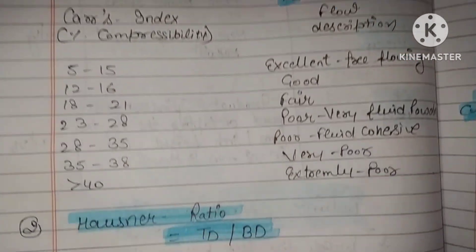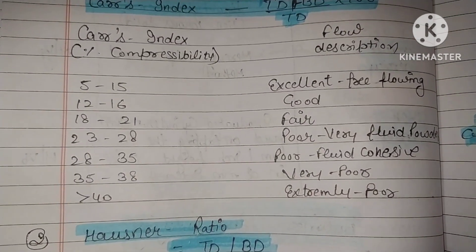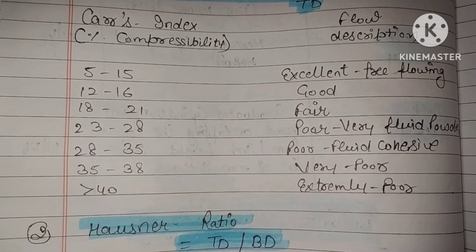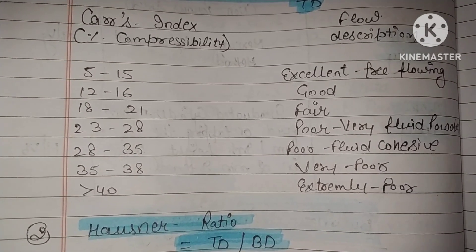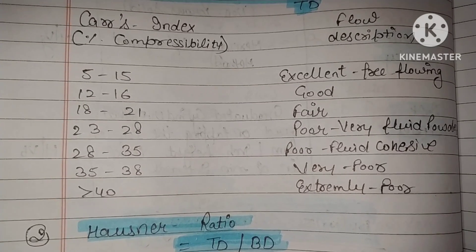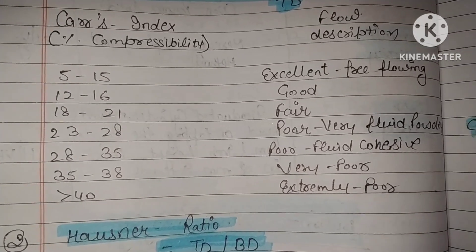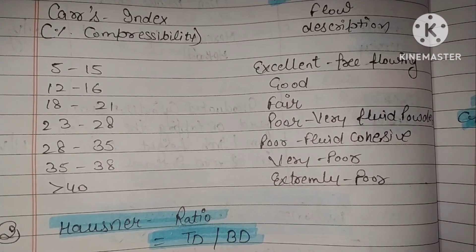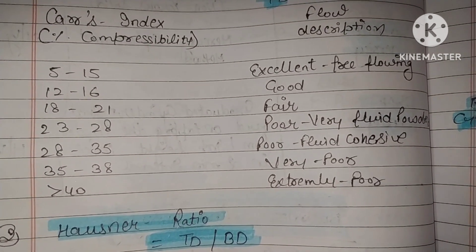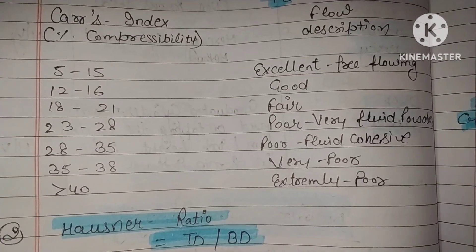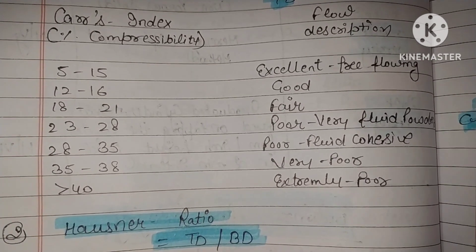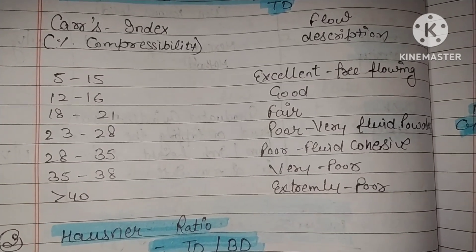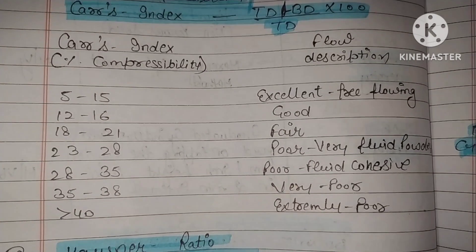Carr's Index flow descriptions: 5–15 = excellent free-flowing; 12–16 = good flow; 18–21 = fair flow; 23–28 = poor, very fluid powder; 28–35 = poor fluid cohesive; 35–38 = very poor; greater than 40 = extremely poor flow. We follow this index as a standard.